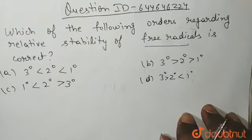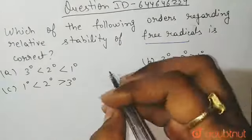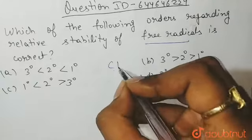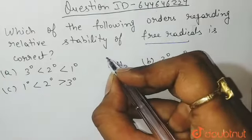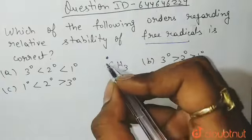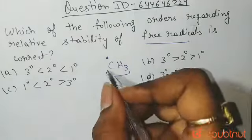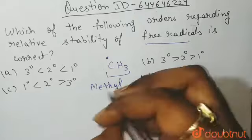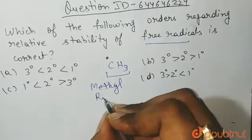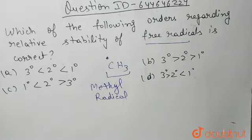So what are radicals? Radicals are basically species which carry one unpaired electron. This is your methyl radical.